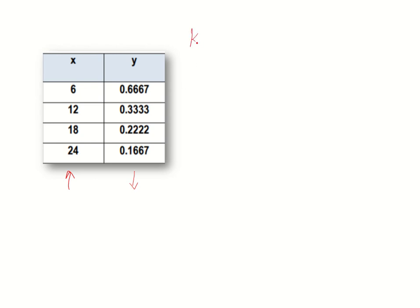So we can now say that this might model inverse variation. But before we can conclude that this model is an inverse variation, we need to establish first the constant. How do we determine the constant? We simply multiply x and y. So we get the product of multiplying x and y here. So you have 6 times 0.6667. So we have here 4, we have 12 times 0.333, we have 3.996 or rounded to 4, then we have 18 times 0.222 equals 3.996 or rounded to 4, then lastly we have 24 times 0.1667 is equal to 4.